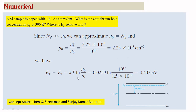For EF relative to EI: EF − EI = KT × ln(N0/ni). Converting KT to electronvolts: 1.38 × 10⁻²³ × 300 gives 0.0259 eV. Natural log of (10¹⁷ / 1.5 × 10¹⁰) gives EF − EI = 0.407 eV. The band gap is 1.1 eV and the Fermi level is 0.407 eV above EI, as shown in the diagram.